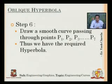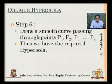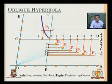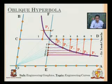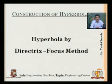I'll pass a smooth curve through P1, P2, P3, P4 up till P7 to get the required oblique hyperbola. Now let's move on to the final method: hyperbola by the directrix and focus method.